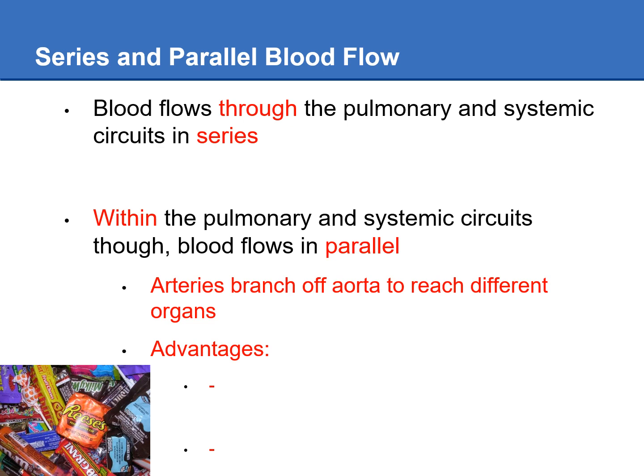Blood flows through the pulmonary and systemic circuits in series — going from the pulmonary circuit to the systemic circuit, back to the pulmonary circuit, and so on. But within the systemic circuit, the blood flows in parallel. The advantages of parallel blood flow through the systemic circuit: first, it makes sure that all organs get enough oxygen; second, it allows you to regulate blood flow to different organs depending on their activity — for example, if you start exercising, you can increase blood flow to skeletal muscles and decrease it to the GI tract.